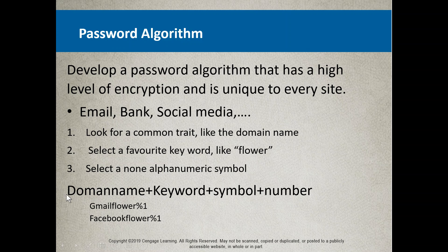You concatenate or join together the domain name, your keyword, the symbol, and a number. For example, to log into Gmail it would be 'Gmailflower%1'. You can put these in any order and capitalize one element — maybe the first character, your hidden word, or the second character of your hidden word. Any site you log into now, you've got your key. For Facebook it's 'Facebookflower%1'.